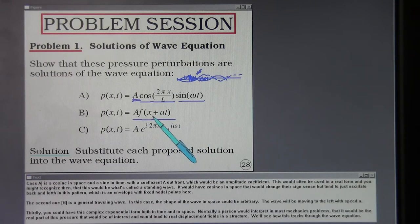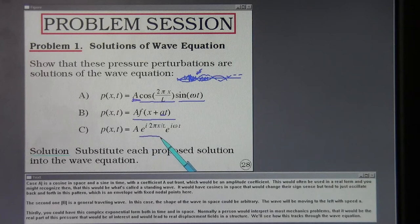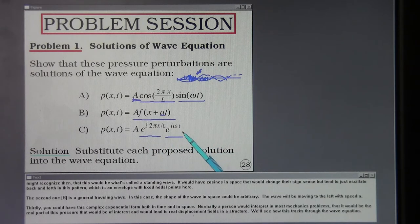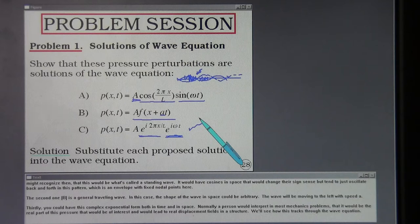The second one is a general traveling wave. In this case, the shape of the wave in space could be arbitrary. The wave will be moving to the left with speed A. Thirdly, you could have this complex exponential form both in time and in space. Normally a person would interpret in most mechanics problems that it would be the real part of this pressure that would be of interest and would lead to real displacement fields in a structure.